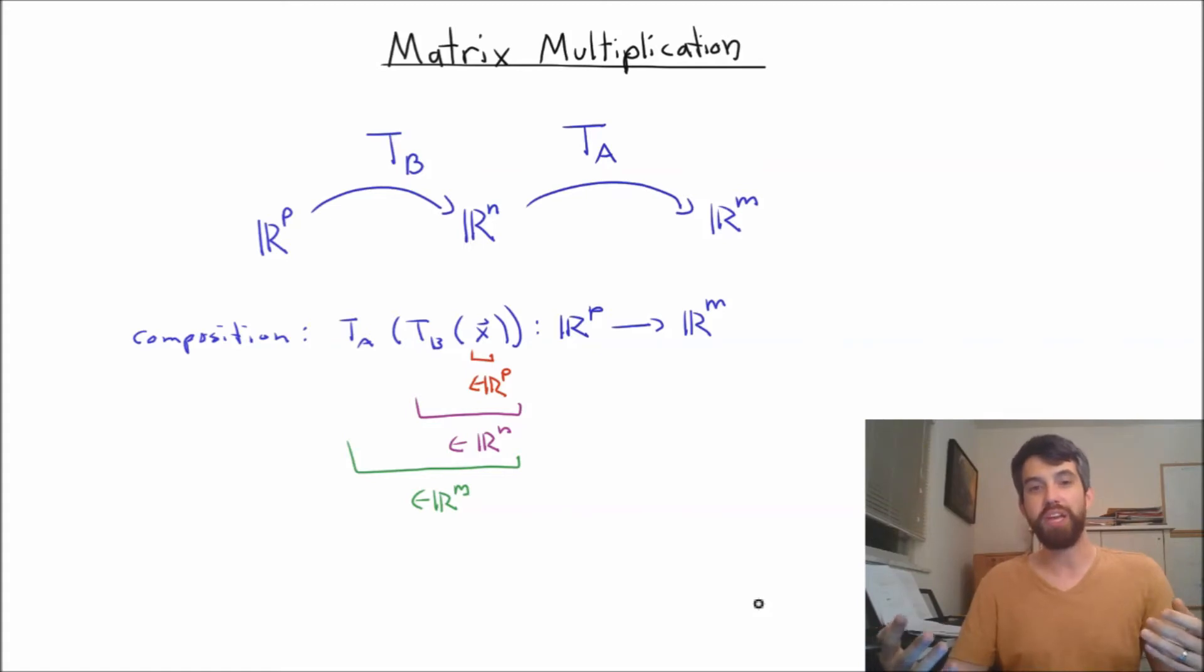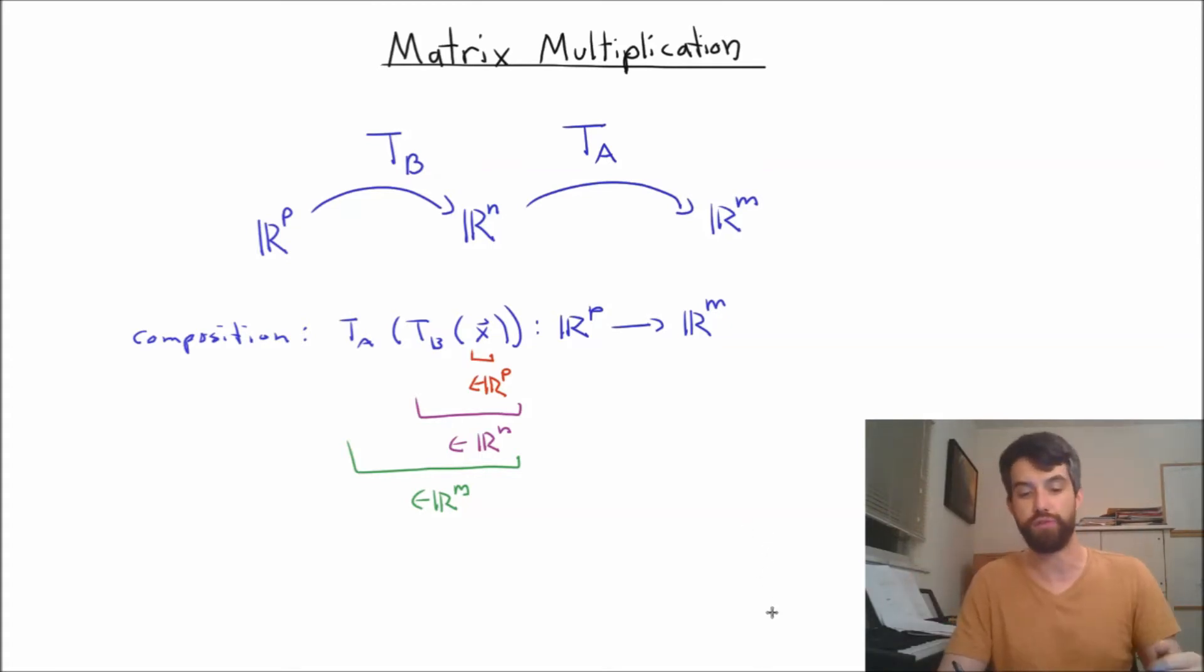That is to say, we can find some matrix that corresponds to this particular transformation, the composition. Well, what is that matrix? How do I find it? I'm going to try to figure out a natural way to write down the matrix that corresponds to that transformation from R^p to R^m, this composition of transformations.